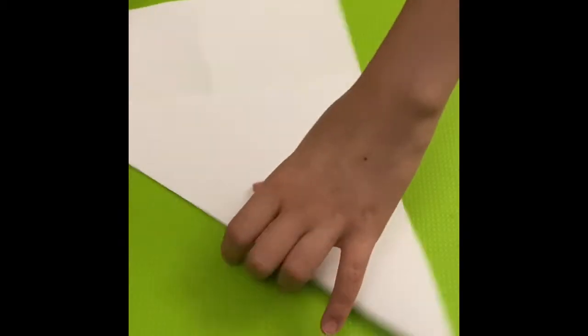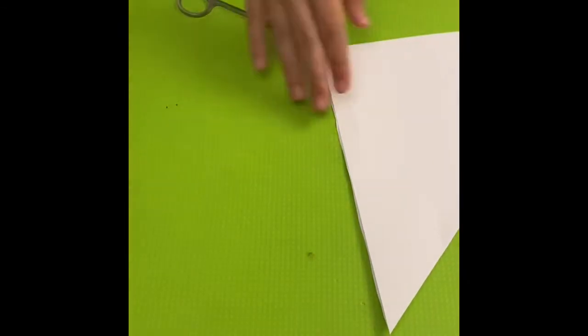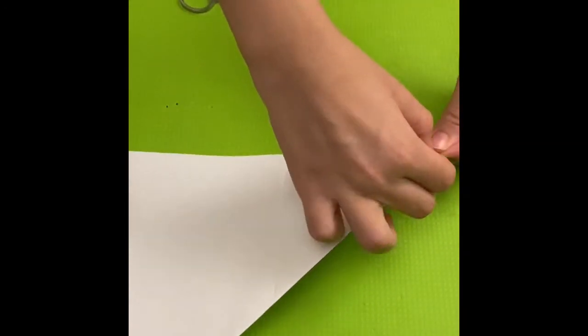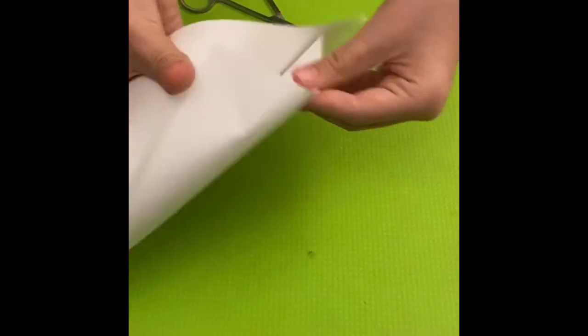Hey guys and welcome back to my channel. So today we're gonna make some origami. First I am getting an A4 paper and cutting it into a square. After I've cut it you have to fold it like this.